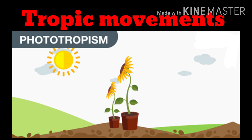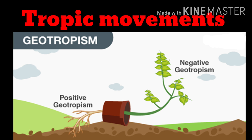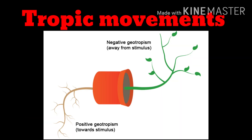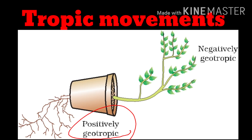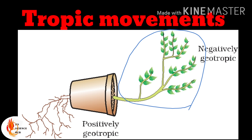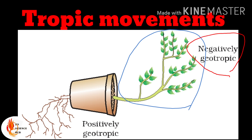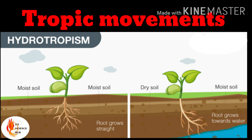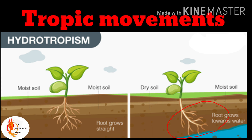Plants show several tropic movements. Due to positive phototropism, the stem grows towards the light. In geotropism, the stimulus is the gravity of the earth. Growth towards the earth's gravity is known as positive geotropism — roots grow towards the ground. Plant stems grow away from the ground, so we name this negative geotropism.